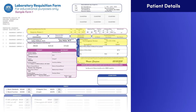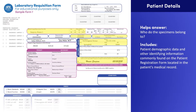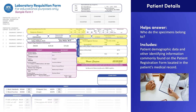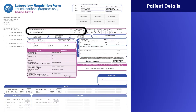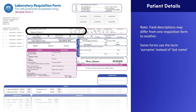The information in the patient details category helps us answer the question: who do the specimens belong to? This category includes the patient demographic data and other identifying information commonly found on the patient registration form located in the patient's medical record. The patient's legal name refers to the patient's last name, first name, and middle initial. Some forms use the term surname instead of last name.